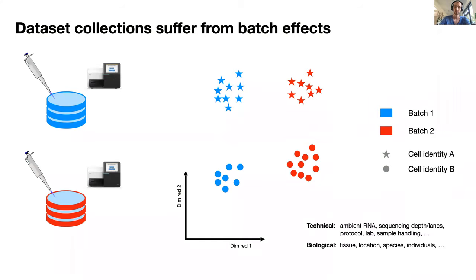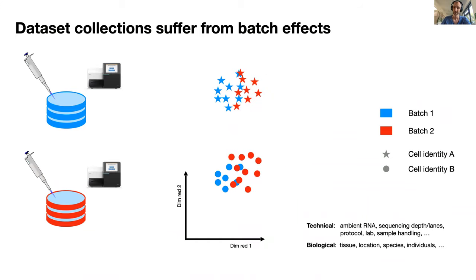The origin of these batch effects can be various — they can be technical in nature, for example different sequencing approach, sequencing depths, different protocols, different labs, or biological in nature, whether they are different tissues, from different locations, or different individuals. Typically what you'd like to have is that these data overlap very nicely in the latent space so you can process them jointly.